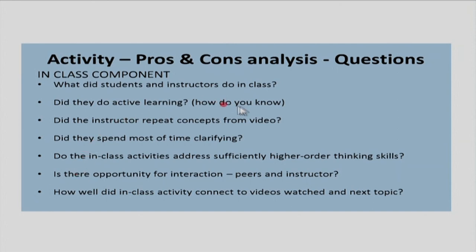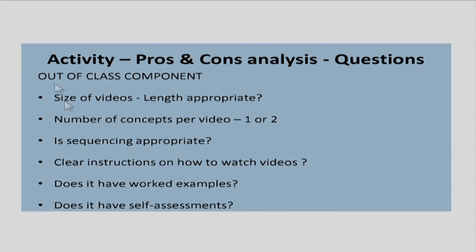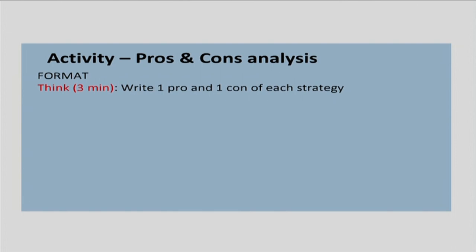The checklist questions include: Did they do active learning? Did the instructor repeat concepts? Did they spend most of the time clarifying doubts? Do in-class activities address higher order thinking skills? Is there opportunity for peer instruction and instructor interaction? How well did the activity connect to the video? There are questions about both the in-class and out-of-class components. Now begin the think phase — pick up your pen and paper and write one pro and one con for each strategy, classroom A and classroom B. You have 3 to 4 minutes.